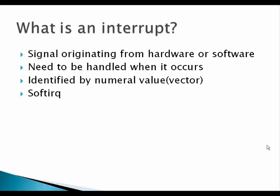Generally, an interrupt or IRQ (interrupt request) is identified by a numeral value called a vector, which we will see when we look at the output of /proc/interrupts. A traditional NIC has only one interrupt, but modern NICs supporting MSI or MSI-X have multiple queues, giving them the possibility to perform some parallel operations. Generally, a single IRQ is handled by a single CPU.